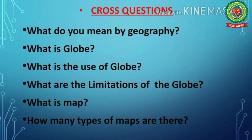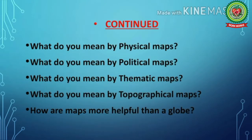Cross-questions: 1. What do you mean by Geography? 2. What is Globe? 3. What is the use of Globe? 4. What are the limitations of the Globe? 5. What is Map? 6. How many types of Maps are there? 7. What do you mean by Physical Maps? 8. What do you mean by Political Maps? 9. What do you mean by Thematic Maps? 10. What do you mean by Topographical Maps? 11. How are Maps more useful than a Globe?